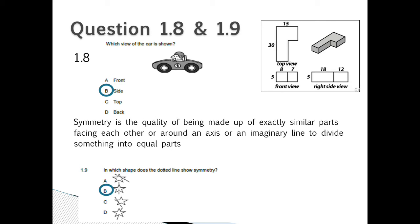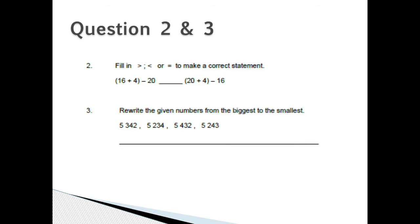Question 2: Fill in greater than or less than or equal to to make a correct statement: 16 plus 4 minus 20, 20 plus 4 minus 16. Rewrite the given numbers from the biggest to the smallest: 5,342, 5,234, 5,432, 5,243.